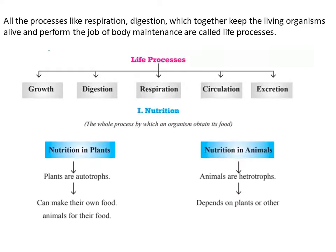Greetings grade 10. Today we are going to see the first chapter of biology, life processes. This chapter is divided into five subtopics. In the first one we are going to discuss about nutrition, then digestion in human body, respiration in humans, circulation and excretion. Talking about the life process, these are all the different types of processes which make a living organism alive.